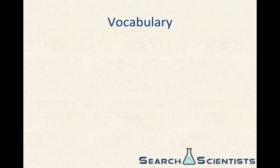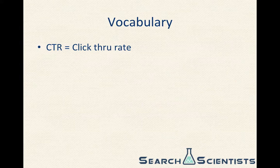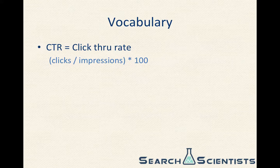So to get started, we're going to be talking about some basic vocabulary. Of course, CTR stands for click-through rate, and to calculate click-through rate, just put your number of clicks over your number of impressions — how many times the ad was seen — then multiply that by 100. So if we have one click over 100 impressions, we times that by 100 and we get the percentage, which is 1% click-through rate. So that's how you calculate CTR.